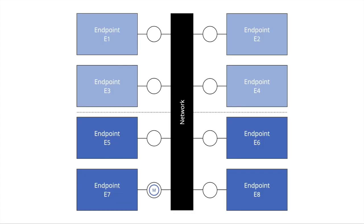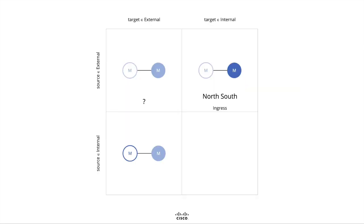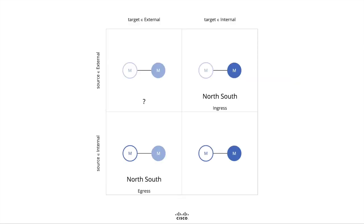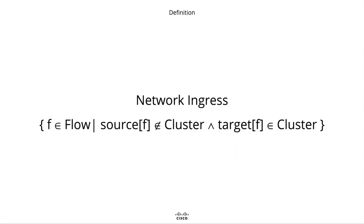In the third combination, source is a member of the set of internal endpoints and target is a member of the set of external endpoints — this particular type of flow is again called north-south traffic. In the fourth and last combination, source is a member of the set of internal endpoints and target is also a member of the set of internal endpoints — this type of flow is called east-west traffic. So in conclusion, network ingress can be defined as the set of all flows that originate outside the cluster and terminate inside the cluster.